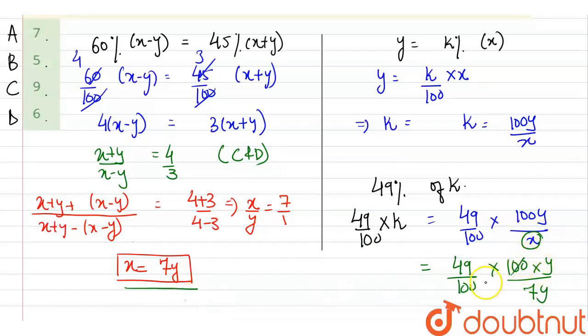So, 49 by 100 into 100 into y upon 7y. This gets cancelled. 100 by 100 goes. 7, 7 into 49 and this y gets cancelled. So, we will have final answer as 7. So, clearly, 49 percent of k is basically 7. So, option A is the correct answer.